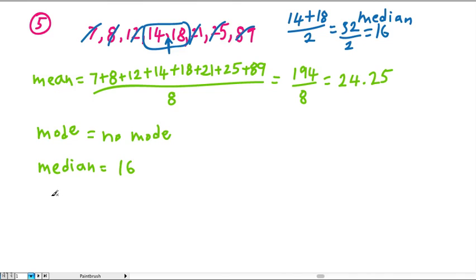The next thing that we're asked for is the range. So the range we need to remember is the maximum number, the biggest minus the minimum. Max minus min. So in this case, that would be 89 subtract 7, which gives us an answer of 82.